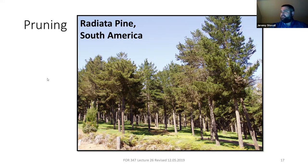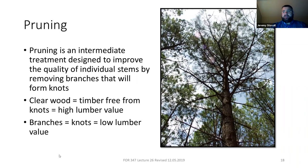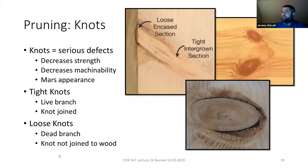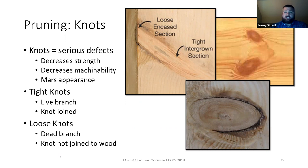Here's an example of pruning in Radiata Pine in South America. It's an intermediate treatment — you're trying to get rid of branches to grow clear wood so you can saw higher-grade boards out of your log. Think about the portable sawmill exercise at Field Station: a board with no knots has fewer defects, has a higher grade, and typically sells for more money. Tight knots form from live branches being grown around; loose knots form from dead branches being grown around. In some products like knotty pine for cabin walls, knots may be favorable, but in most applications knots are a defect.